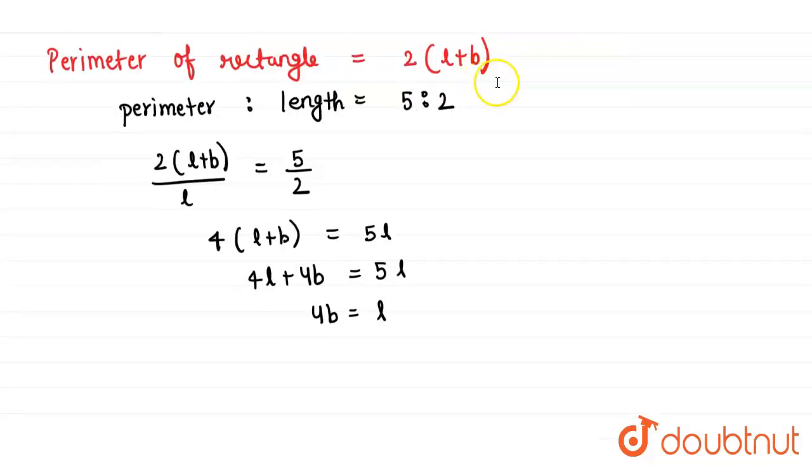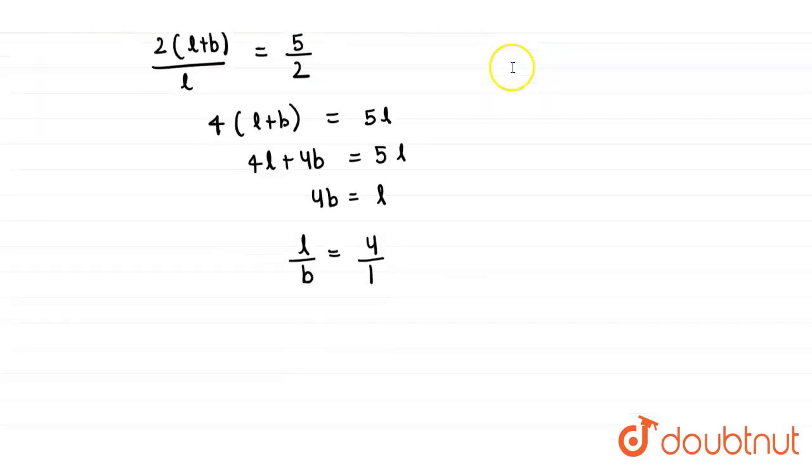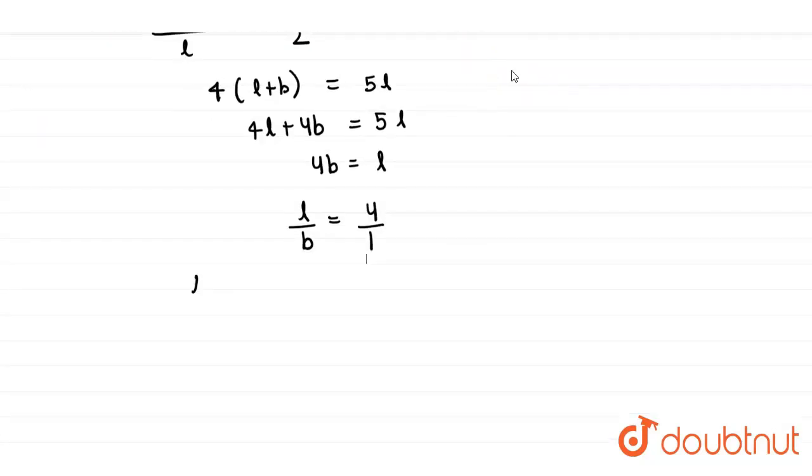So after this, let us move b from here to there, so l divided by b equals 4 divided by 1. So the ratio between the length and breadth is 4:1. This is our final answer.